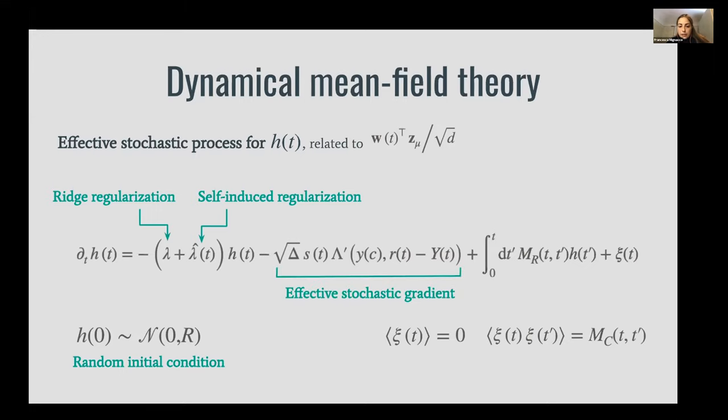Then we obtain a term that accounts for the effective stochastic gradient and a memory term. We have different sources of noise in the dynamics, which is different from what we would obtain with the Langevin algorithm. We have the random initial condition, the stochasticity of the gradient—and this is in particular the difference with the Langevin algorithm—and also the process has a Gaussian effective noise.